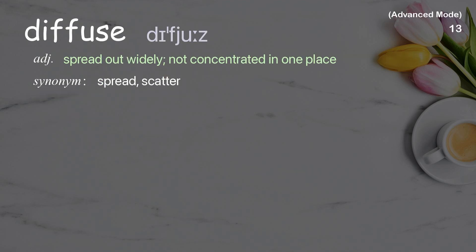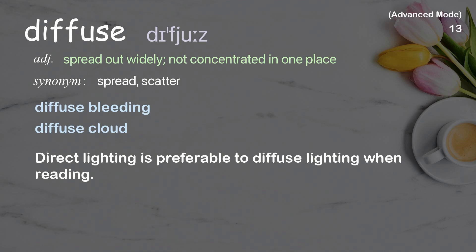Diffuse: Spread out widely, not concentrated in one place. Examples: Diffuse bleeding. Diffuse cloud. Direct lighting is preferable to diffuse lighting when reading.